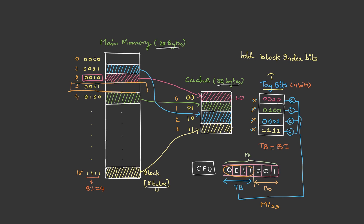Based on the block index, the CPU goes to main memory to fetch the required block. However, the cache is already full. The CPU has a choice to copy the data from the block into any of the cache lines. There are many algorithms for this — few famous ones are FIFO (first in first out), where whichever data was loaded first gets replaced.